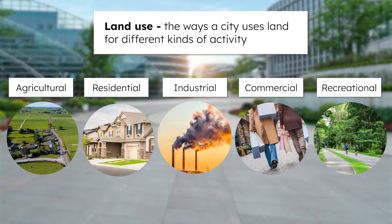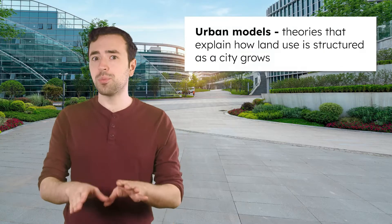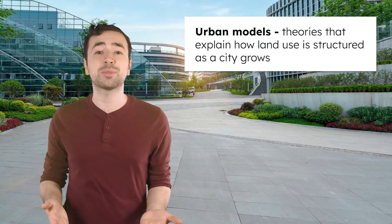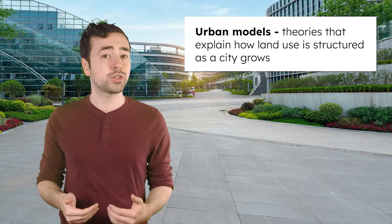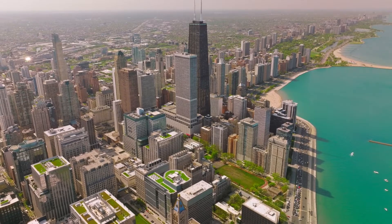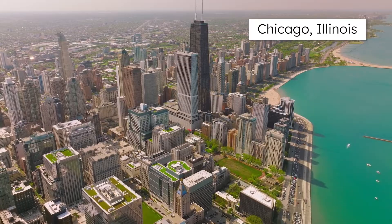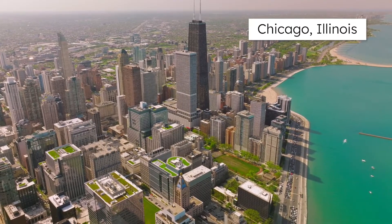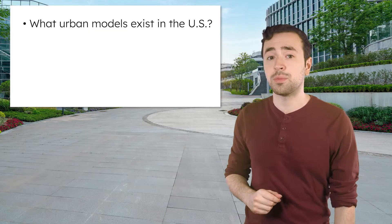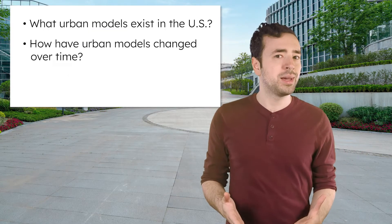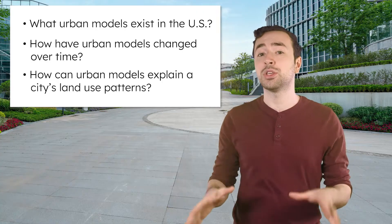In your master plan, you decide how your city's land use is structured. Thankfully, we have a resource to help you: urban models. Urban models are theories that explain how land use is structured as a city grows. Urban geographers developed these models after observing the growth of the city of Chicago, and these models ended up explaining how other major US cities were growing too. Our visit to Chicago will help us learn what US urban models exist, how they've changed over time, and how they help us explain a city's land use patterns.